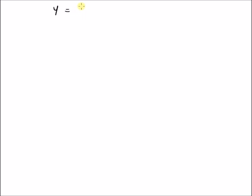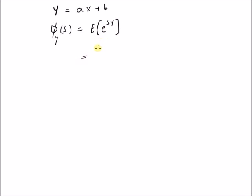Hello, welcome. In this short video, let us look at the moment generating function of a linearly transformed random variable. Given the random variable x, we have a new random variable y which is a linear function of x. Our goal is to find the moment generating function of y — that is, we want to find phi_y of s, which is by definition equal to the expectation of e to the power s times y.